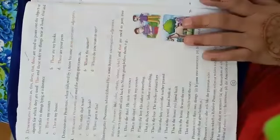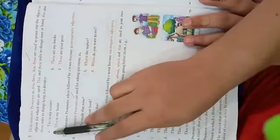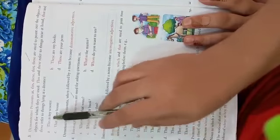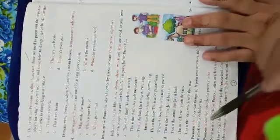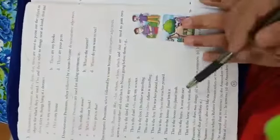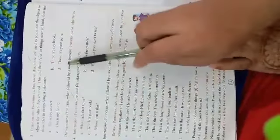For example, point eight: this is my scooter, so it points out the nearer thing. These are my books. That is my house. And those are your pens. So this, these, that, those are included in demonstrative pronouns. Come to the more explanation.